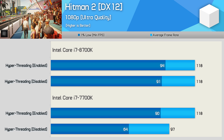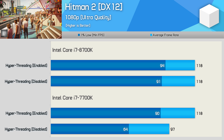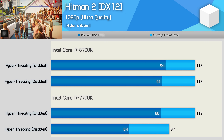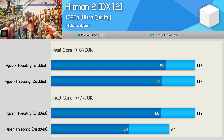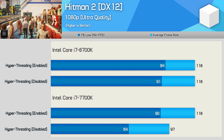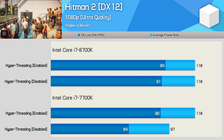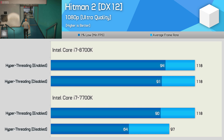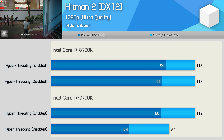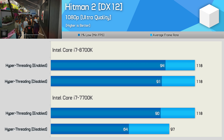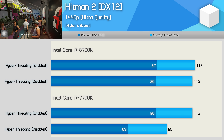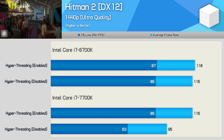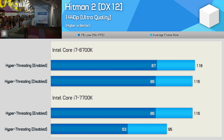In Hitman 2, disabling hyperthreading has no real impact on performance for the 8700K. However, once again the impact for the 7700K is quite devastating — the average frame rate dropped by 18%, and far worse was the almost 30% reduction in 1% low performance. Granted, we're still seeing over 60fps at all times, but for those chasing big frame rates this kind of performance hit is brutal. Even at 1440p, the 7700K is hit hard, with a 25% reduction in 1% low performance.